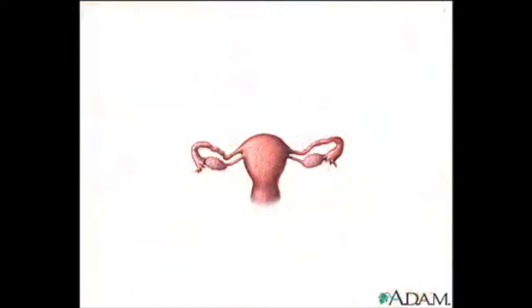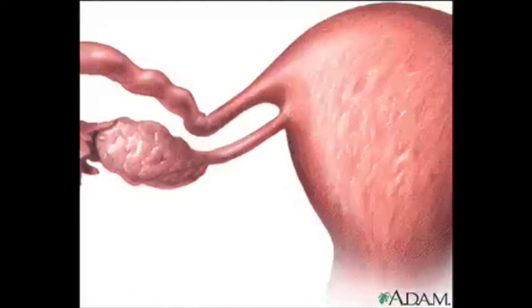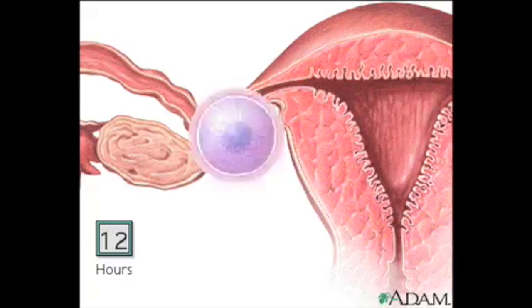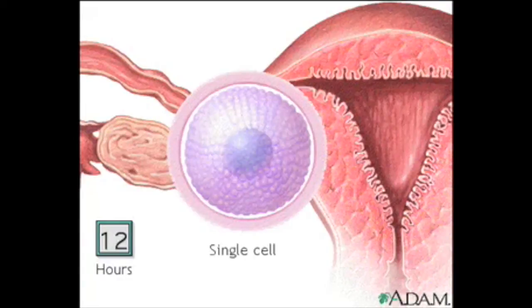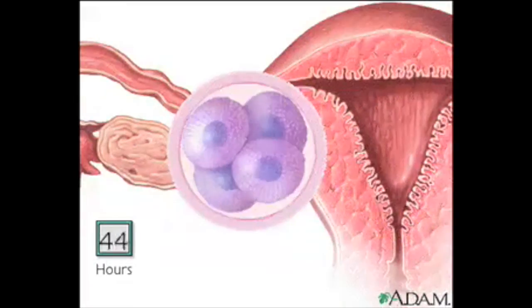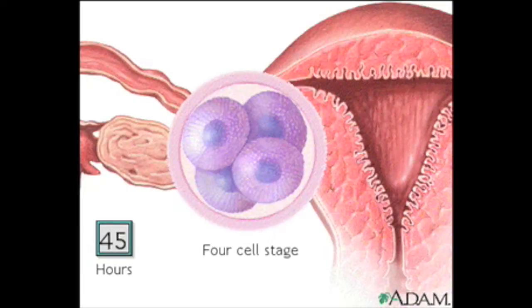For the first 12 hours after conception, the fertilized egg cell remains a single cell. After 30 hours or so, it divides from one cell into two. Some 15 hours later, the two cells divide to become four.